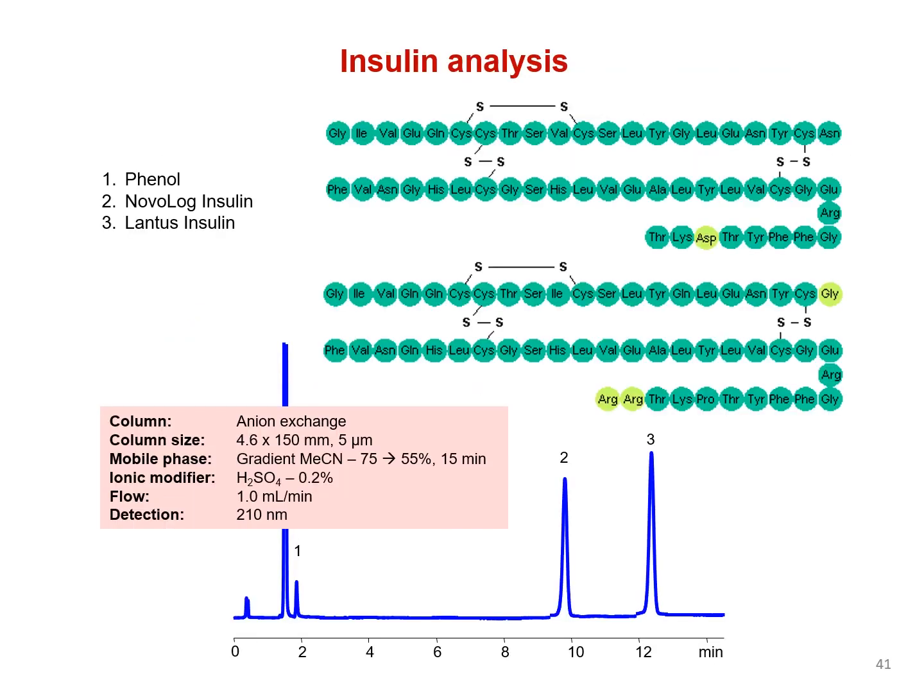Here's an example of a simple separation and retention of insulin using BIST and a gradient elution. BIST allows for high selectivity between structurally similar insulins due to the slight changes in the peptide composition, geometry, and number of charges in the molecules.